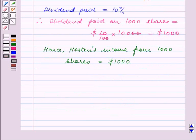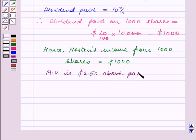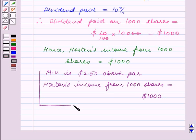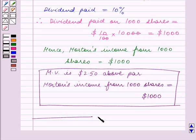So the final answer to the question is: the market value is $2.50 above par, and Morton's income from 1,000 shares is equal to $1,000. With this we end our session. Hope you enjoyed the session.